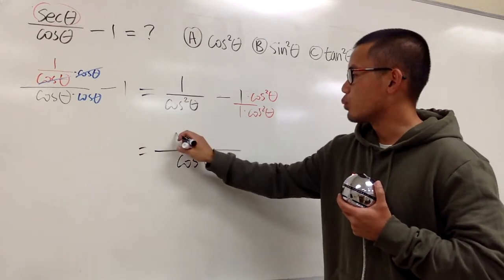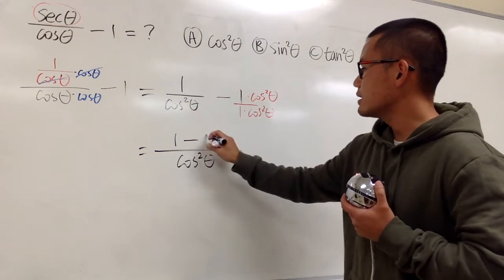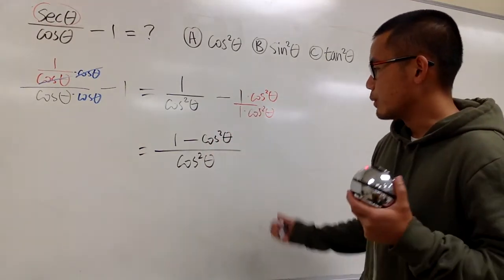And on the top, we just have 1, and then minus cosine squared theta, this is just that. And can we do anything else?